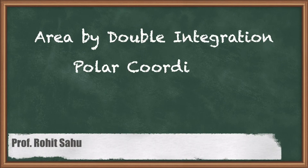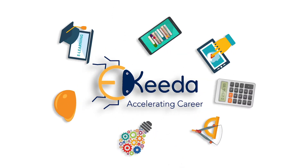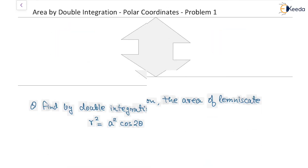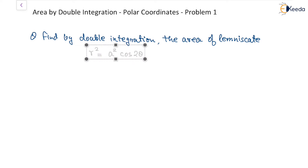Hello, in this session we'll see our first problem on area by double integration for polar coordinates. The question is: find by double integration the area of the lemniscate, which is given by r² = a² cos(2θ). It is expected that you know the graph of such a lemniscate — we have two lobes of this type.